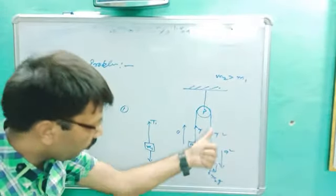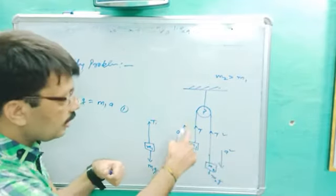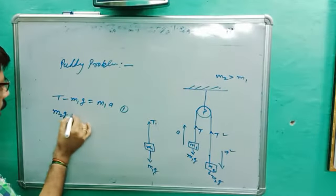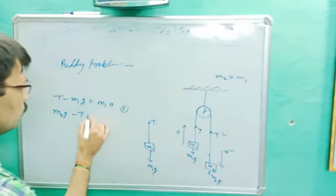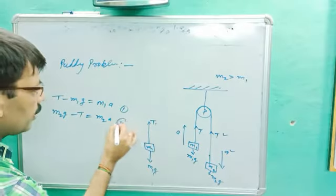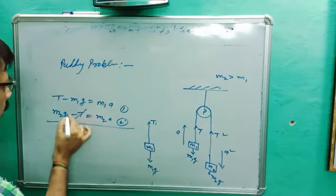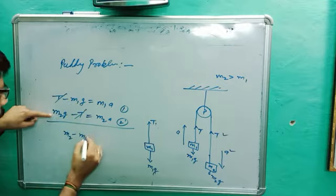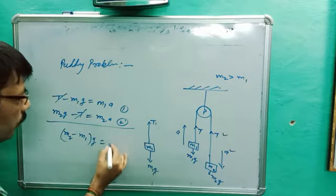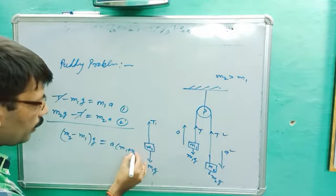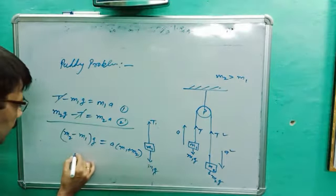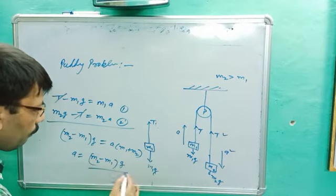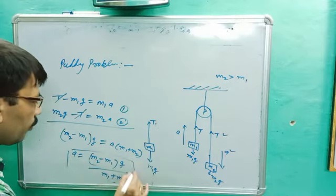For the body coming down, M2G is greater than T. So we write: M2G minus T equals M2A. This is equation number two. If you add equations one and two, T cancels out. We get M2G minus M1G equals M1 plus M2 times A, giving us the acceleration formula: A equals (M2 minus M1)G divided by (M1 plus M2).